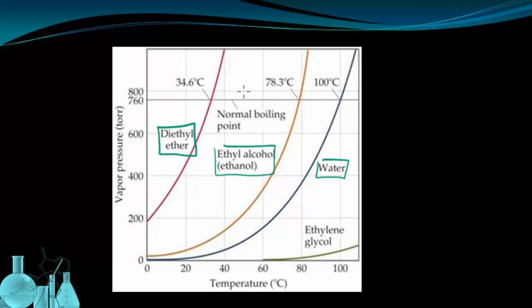Now this graph may look overwhelming at first, but basically it compares vapor pressure of a substance to the temperature that that substance is at. It also has a line running across at a certain level of pressure, and that represents standard pressure. Now let's look at what kind of information we can get from this graph.